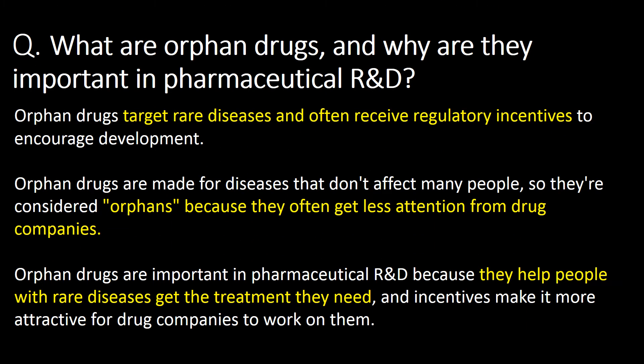What are orphan drugs and why are they important in pharmaceutical R&D? Orphan drugs target rare diseases and often receive regulatory incentives to encourage development. Orphan drugs are made for diseases that don't affect many people, so they are considered orphan because they often get less attention from drug companies. Orphan drugs are important in pharmaceutical R&D because they help people with rare diseases get the treatment they need, and incentives make it more attractive for drug companies to work on them.